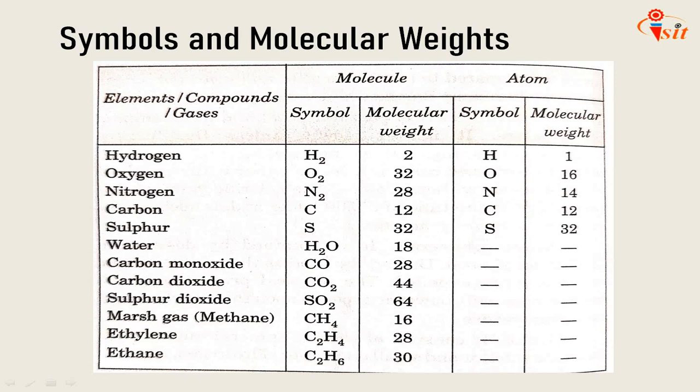The list includes: hydrogen, oxygen, nitrogen, carbon, sulphur, water, carbon monoxide, carbon dioxide, sulphur dioxide, methane (also called marsh gas), ethylene, and ethane. That list is required in order to go for the combustion equations, so we need to know the molecular weights. For example, hydrogen has a molecular weight of 2 and oxygen has a molecular weight of 32. Likewise, all elements have their molecular weights given.